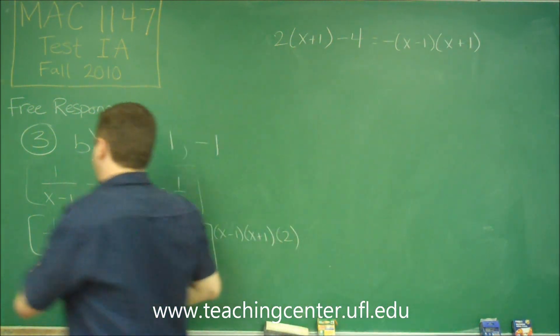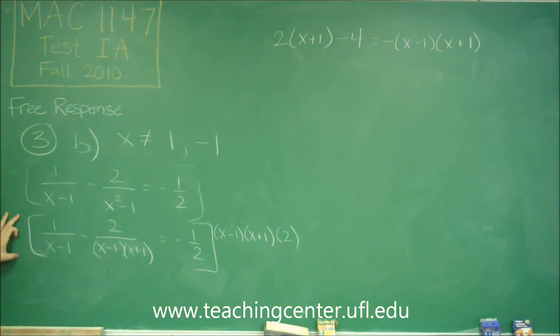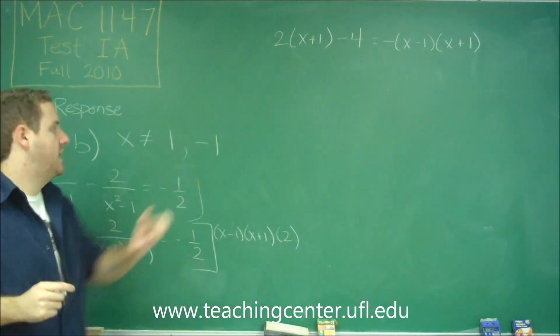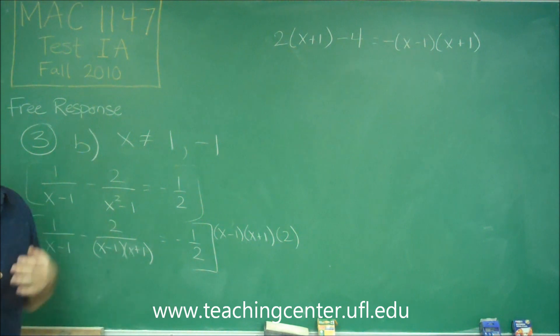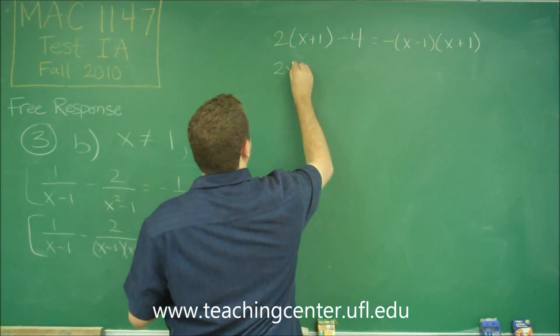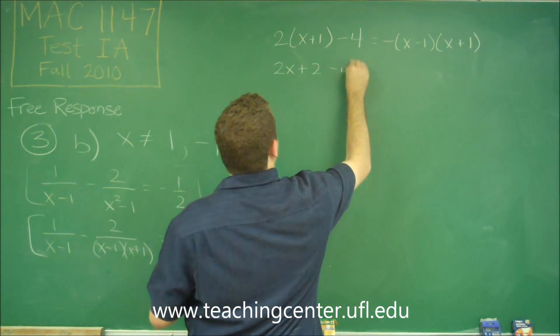So you can see, now we've transformed this equation, which had fractions and problems with the domain, into this one. So these two are the same, except x can't be 1 and negative 1, so let's check if that ends up coming out. So we have 2x plus 2 minus 4.